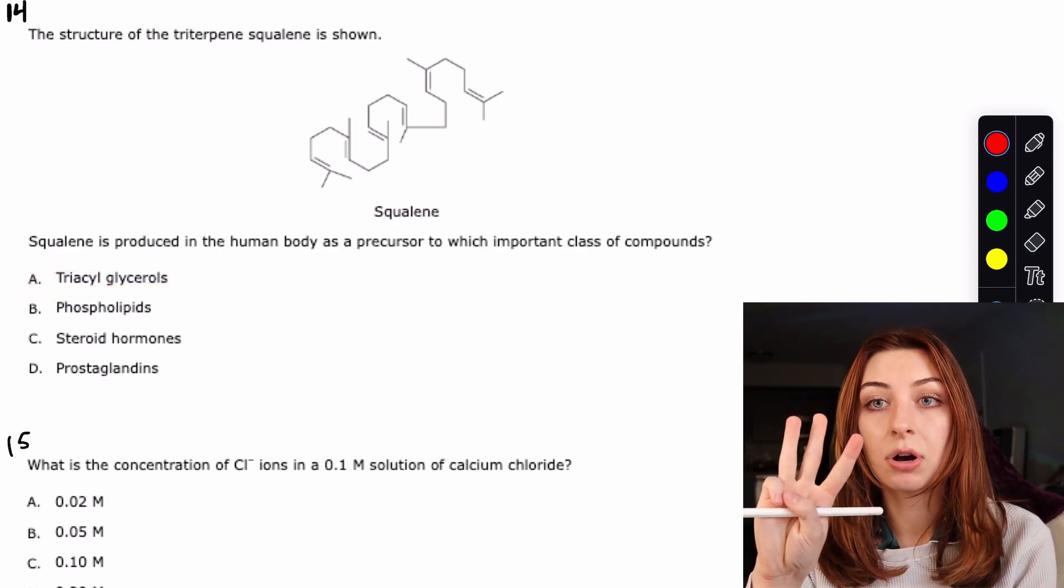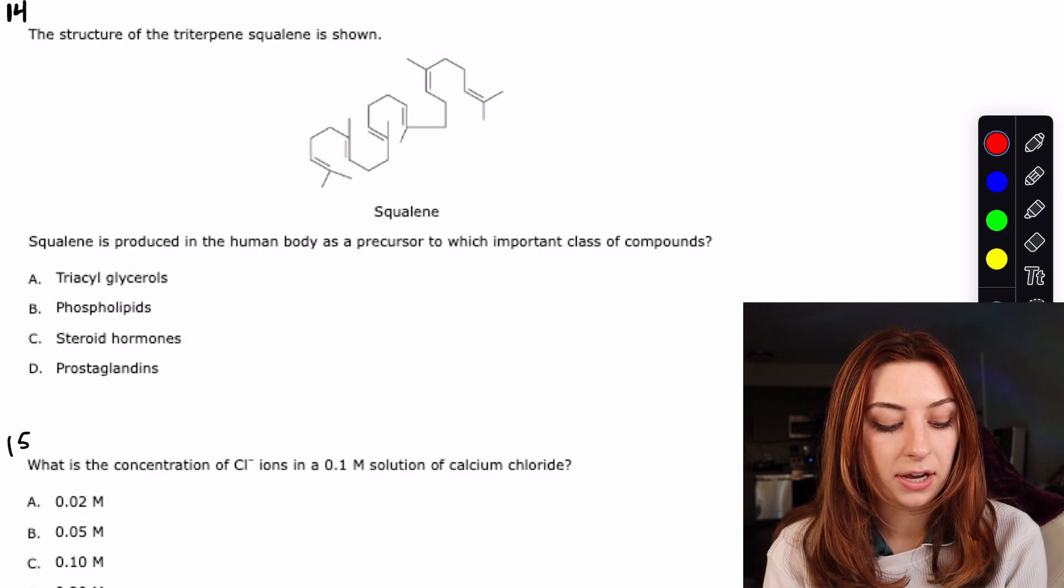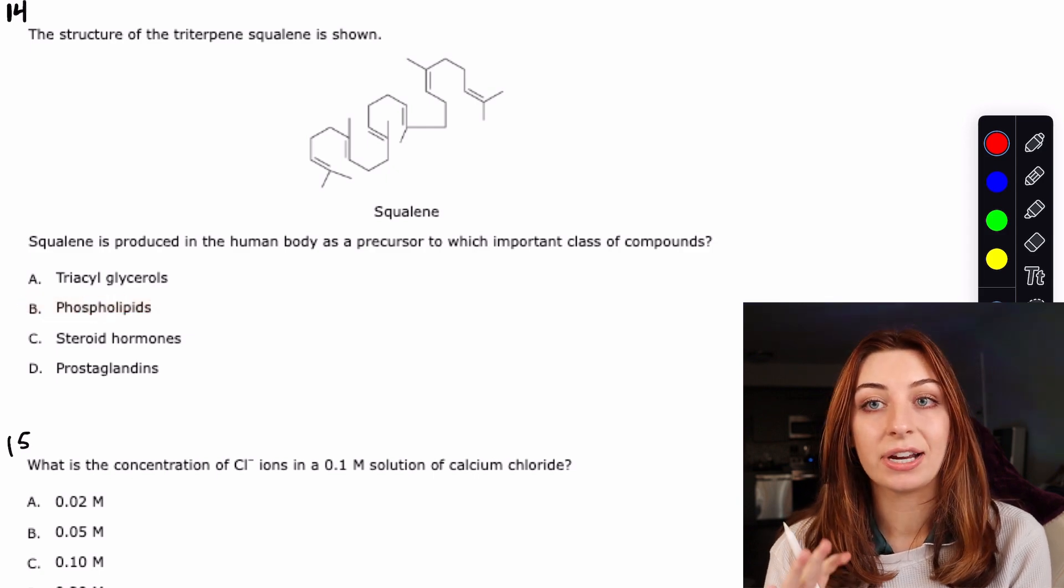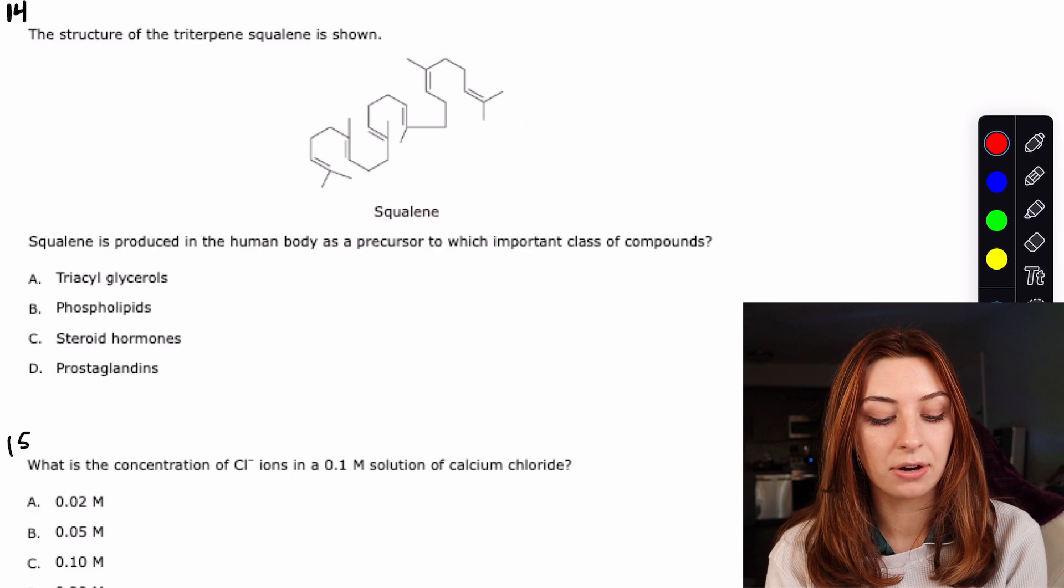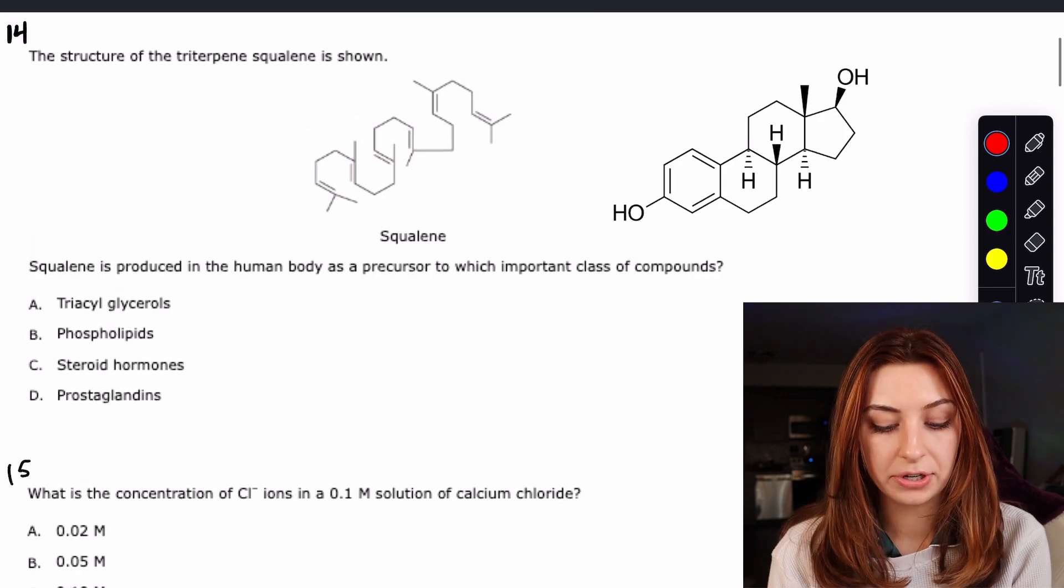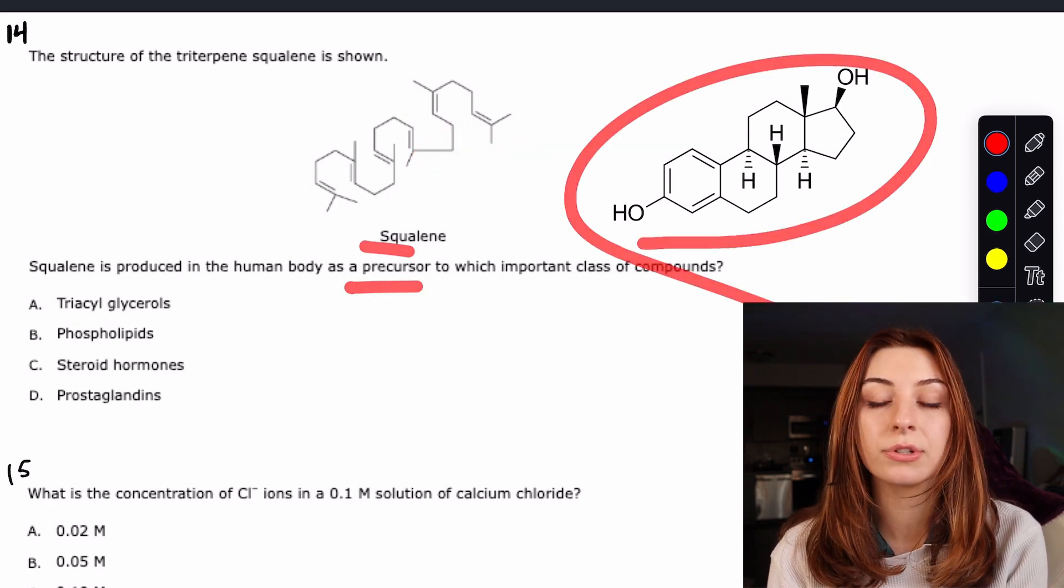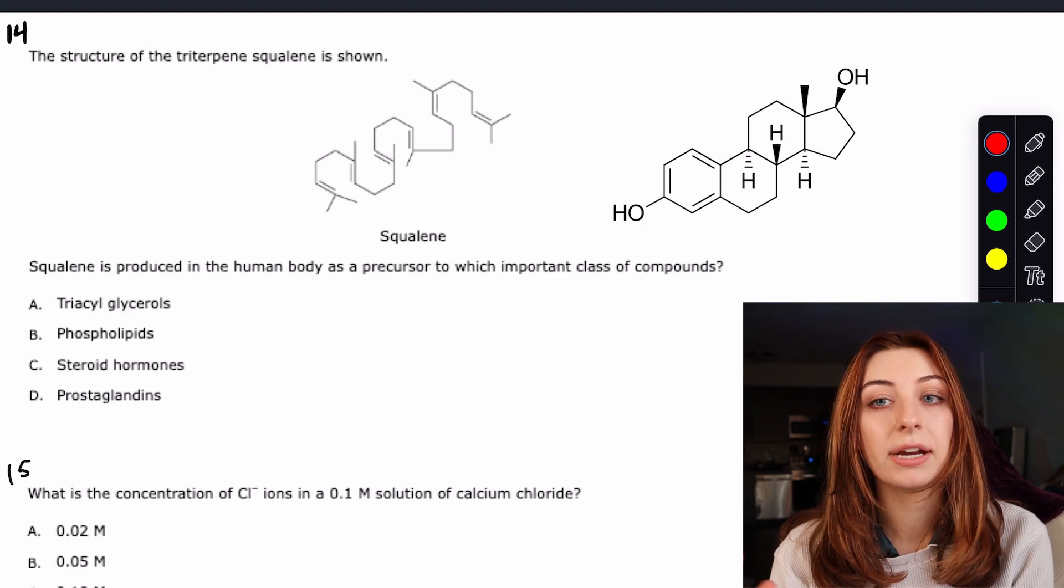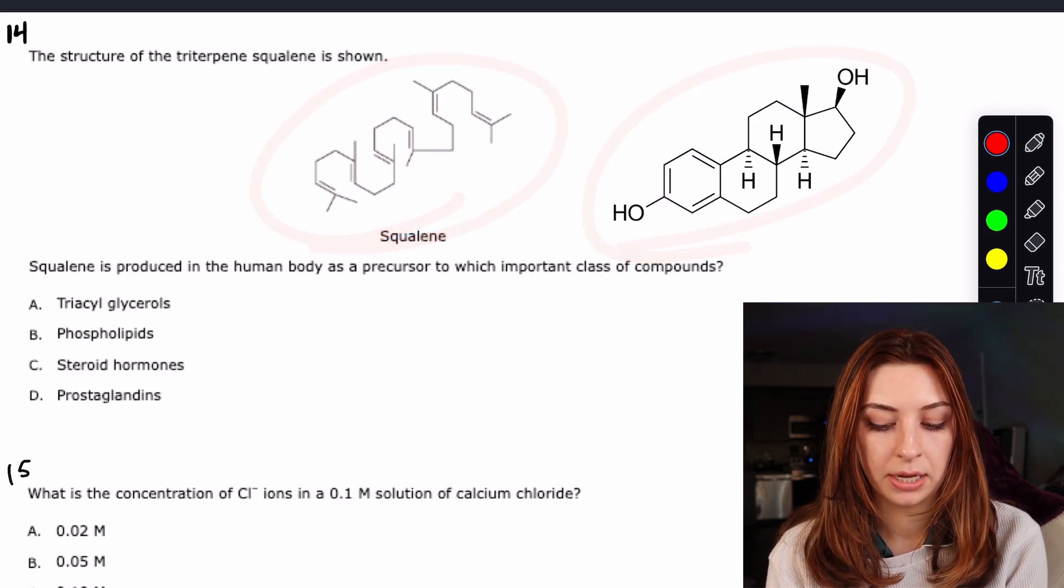On the MCAT when they give you the structure of some chemical molecule and they ask what's a precursor or what's something that's down the line chemically from this chemical, all that they are asking you is which of these looks the same or has the same chemical properties. Triacylglycerols - this is an extremely non-polar molecule, it is not going to have any alcohol groups. Phospholipids have that charged phosphate head, very polar, not this. This is so hydrophobic. Steroid hormones - you should have alarm bells going off because it looks really similar to the four ring structure of steroid hormones. So we're definitely liking that answer choice. That would be our correct answer.